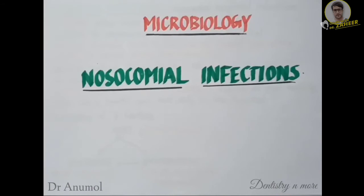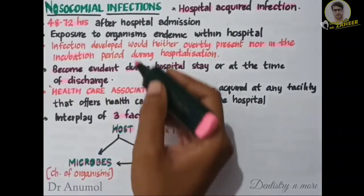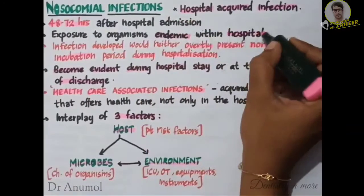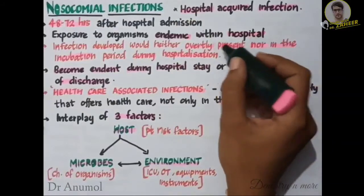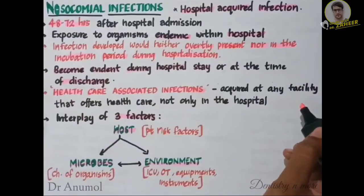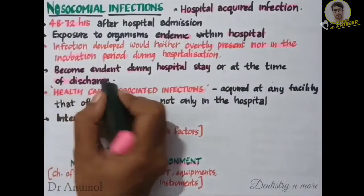Hello all. Today we will be discussing nosocomial infections. Nosocomial infections are otherwise known as hospital-acquired infection or hospital-associated infection. The patient will get infected after 48 to 72 hours of hospital admission, infected by organisms which are endemic within the hospital. The infection developed would neither be overtly present nor in the incubation period during hospitalization.